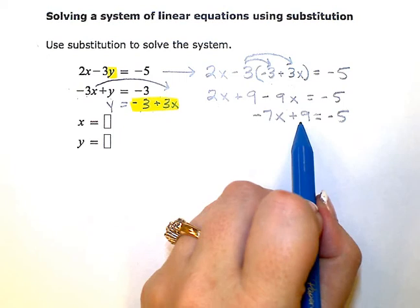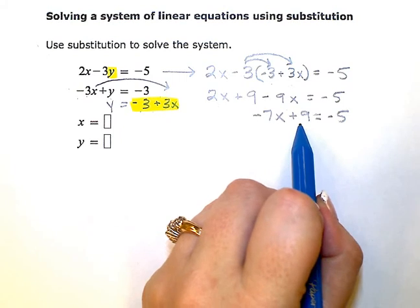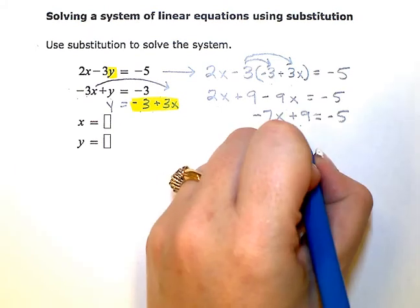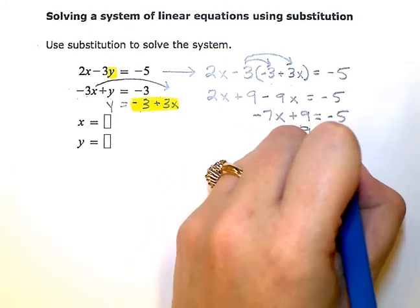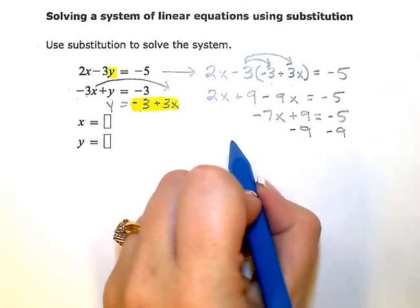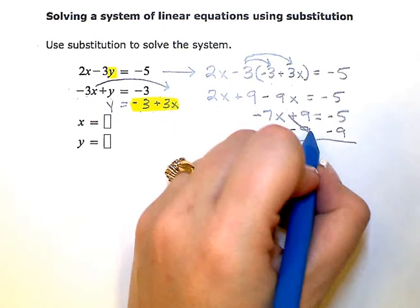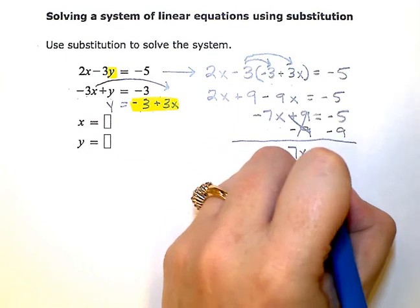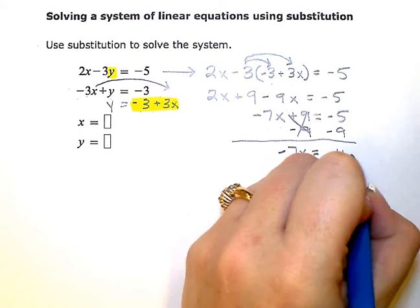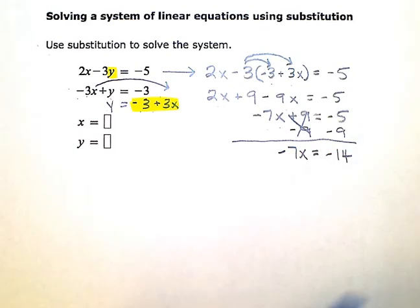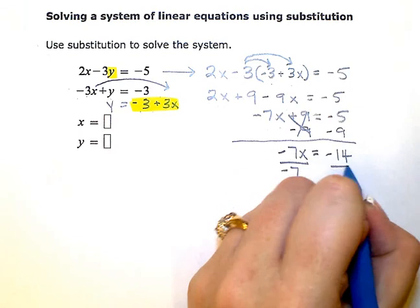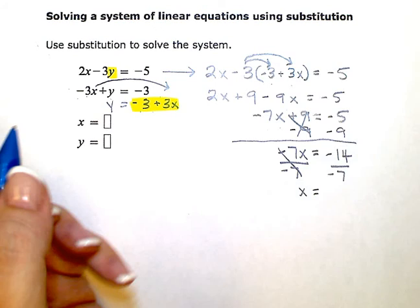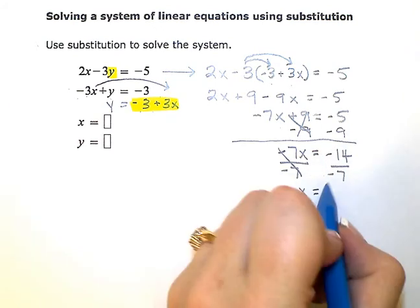Then I'm going to zero out this constant term on the left side with the x because I'm trying to get the x by itself. So I'm going to subtract 9 and then keep my equation balanced by doing the same thing on the other side. When I simplify, I'll have negative 7x on the left and negative 14 on the right. My last step is to divide by negative 7. And when I simplify, x is equal to negative 14 divided by negative 7 is positive 2.